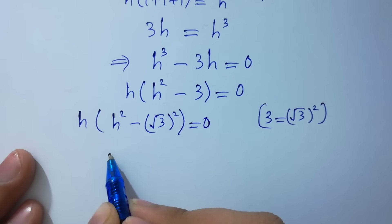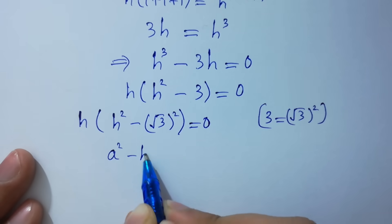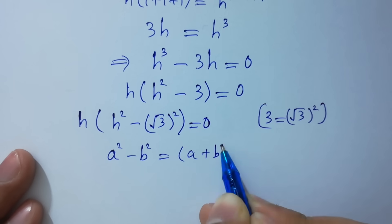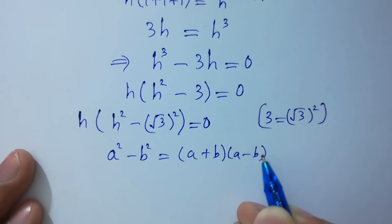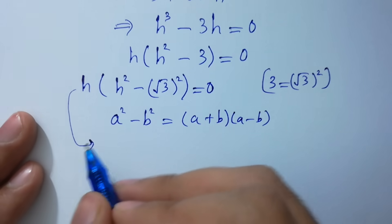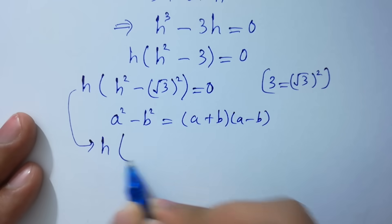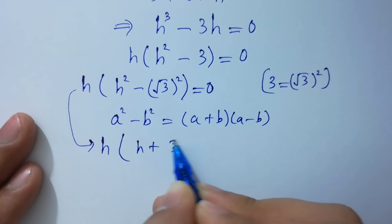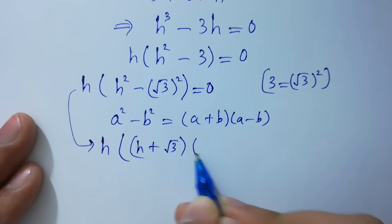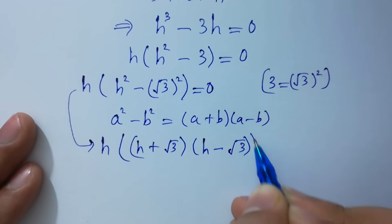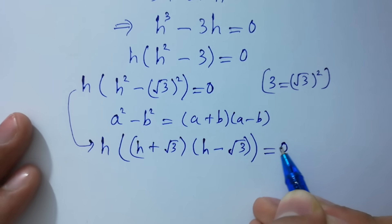As we know that a squared minus b squared equals (a plus b)(a minus b), so this becomes h times (h plus square root of 3) times (h minus square root of 3) equal to 0.